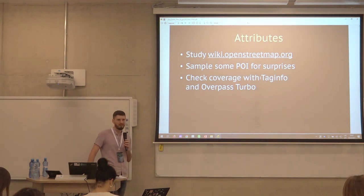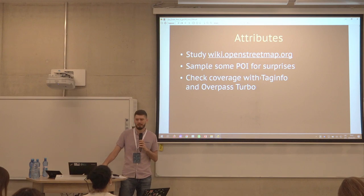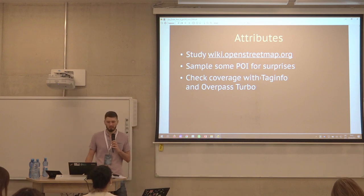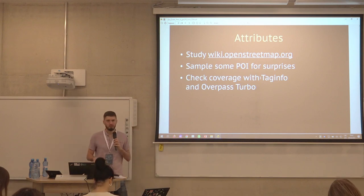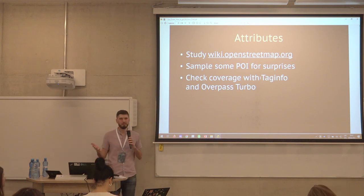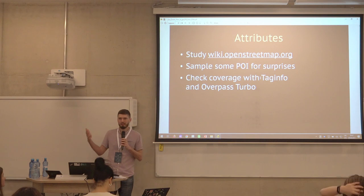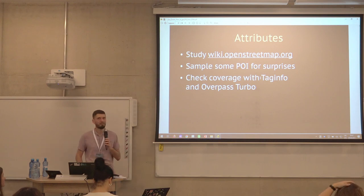How to find these attributes? You can just study the wiki and search for samples you want to use. You might see that a tag has some really useful attributes you hadn't expected.